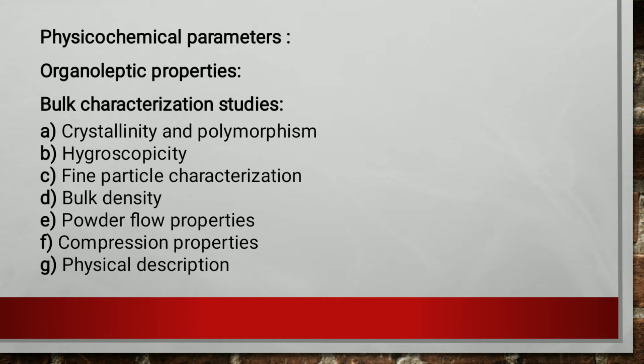Certain physical and chemical properties of drug substances are affected by particle size distribution, including drug dissolution rate, bioavailability, content uniformity, taste, texture, color, and stability. Flow characteristics and sedimentation rates are also important factors related to particle size. Therefore it is essential to estimate as early as possible how the particle size of drug substances may affect the formulation and product efficacy. Knowledge of true and bulk densities of the drug substance is very important for determining the size of the final dosage form and can affect powder flow properties.